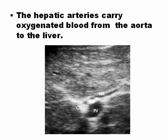The hepatic arteries deliver oxygenated blood from the aorta to the liver. Even though the main function of the liver is to clean the venous blood coming from the digestive system, it also needs oxygenated blood coming from the aorta through the hepatic artery.